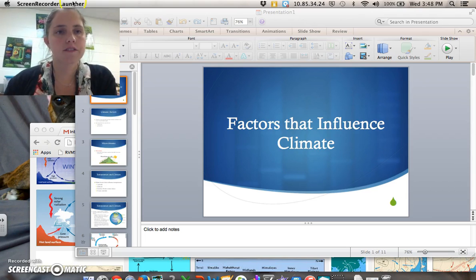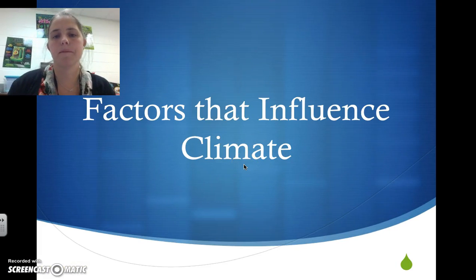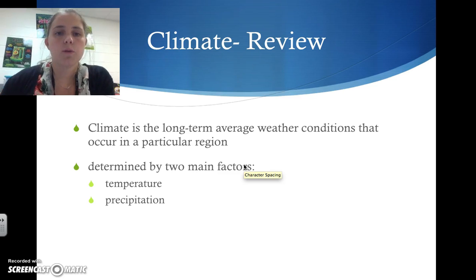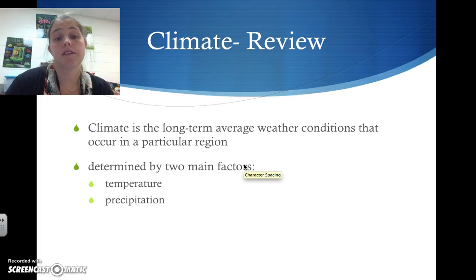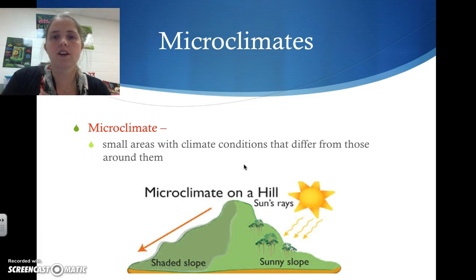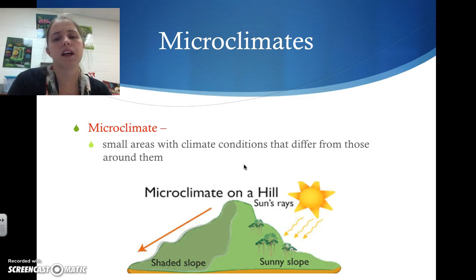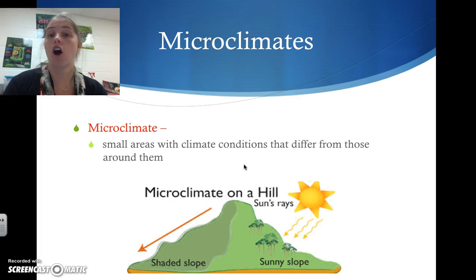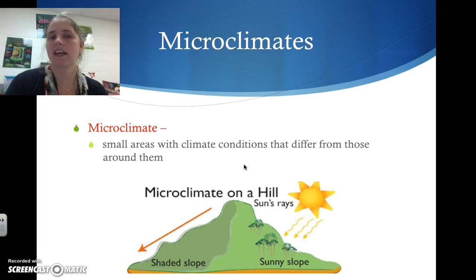We're going to discuss factors that influence climate. Climate is the long-term average of weather conditions in a specific area, affected by both temperature and precipitation. There are things called microclimates — smaller areas with climate conditions a little different from those around them. There are big climate areas with similar precipitation and temperature, and then these tiny microclimates that exist within that larger climate.